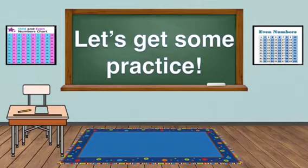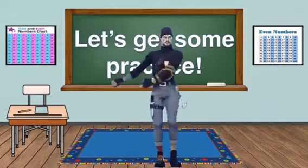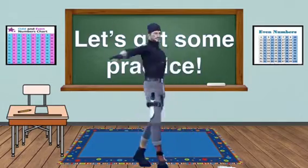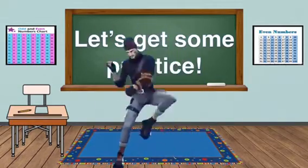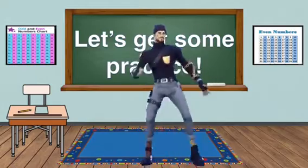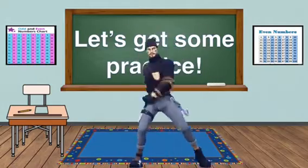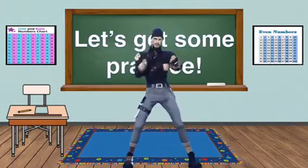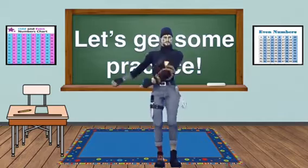Let's get some practice. 0, 2, 4, 6, 8 — even numbers are so great! 1, 3, 5, 7, 9 — missing partners all the time.